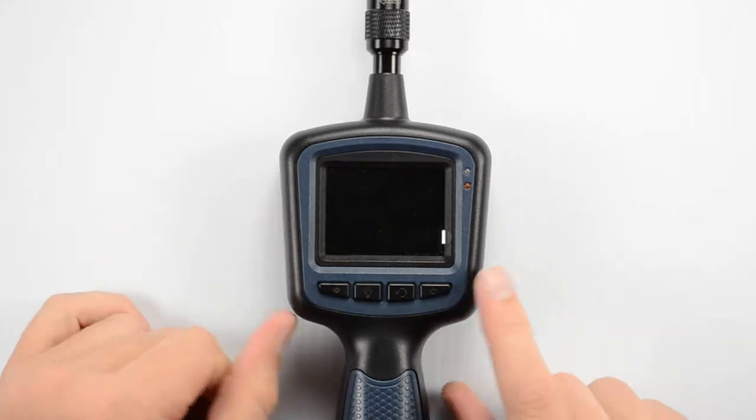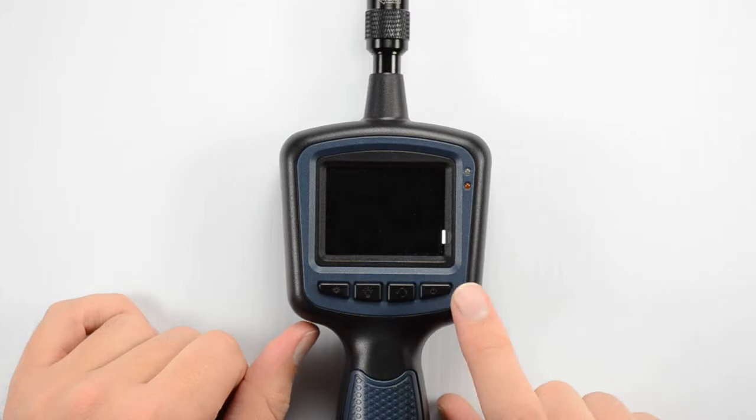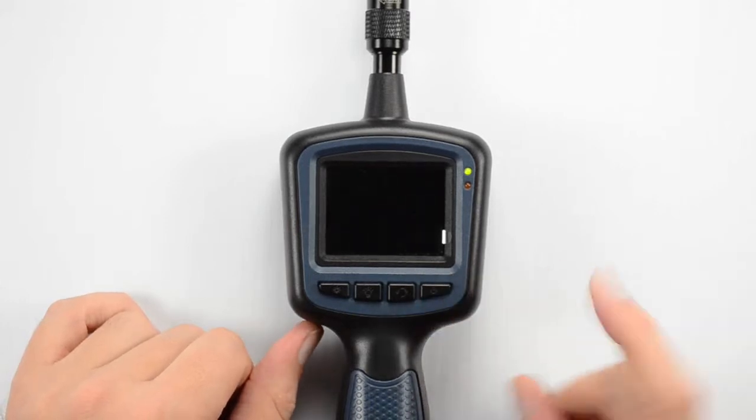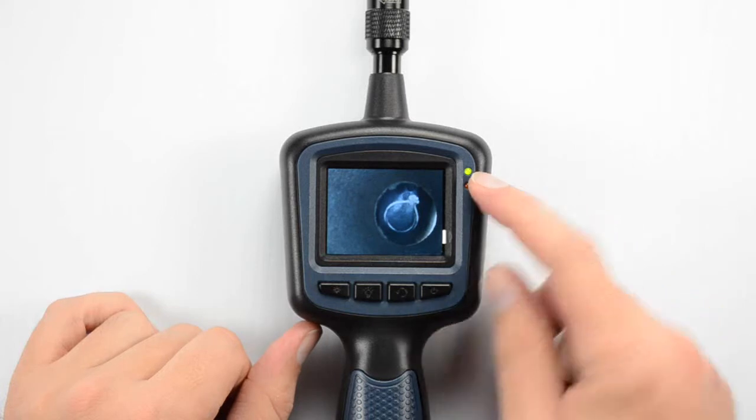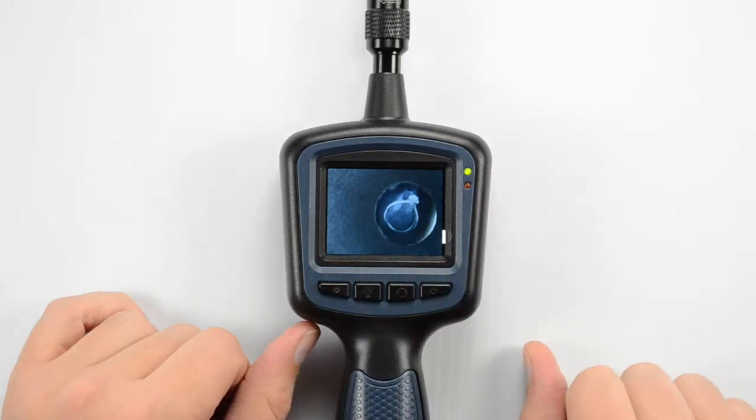First thing that we're going to want to do is over here on the right side we've got our power button so we'll just go ahead and press that to turn the camera on. You see our power indicator lights up here in the top corner and then our image shows up here on our screen.